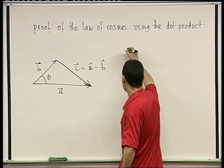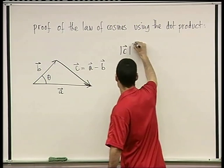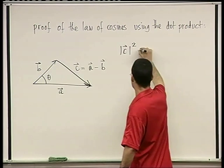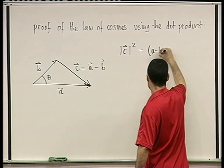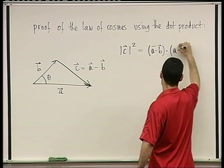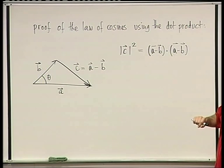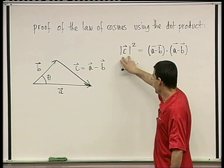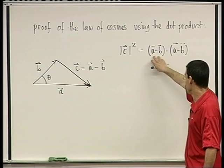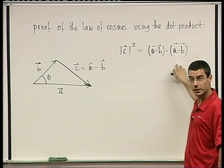I want to calculate the length of C squared, then take the square root at the end. |C|² equals (A minus B) dot (A minus B). This is because C = A − B, and one property we established is that the length of a vector squared equals the vector dotted with itself — since the dot product gives length times length times cosine of zero, which is one.